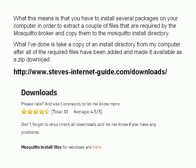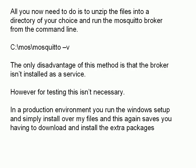What I've done is taken a copy of the install directory from one of my computers after all the required files have been added to that directory, and I've just made it available as a zip download. So all you need to do is download that file, unzip it into a directory of your choice on your computer, and then you can simply run the Mosquitto Broker from the command line using mosquitto -v for verbose mode or whatever other options you want to use, and it will run.